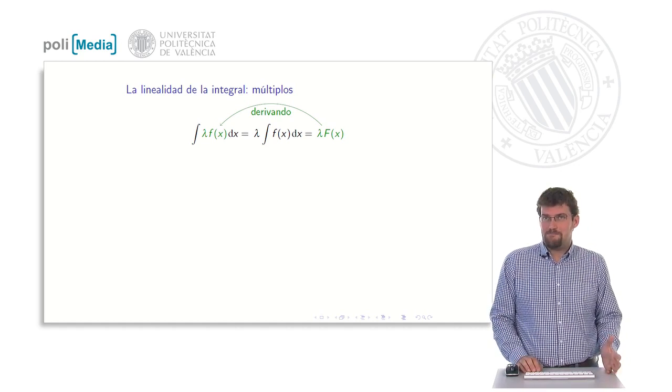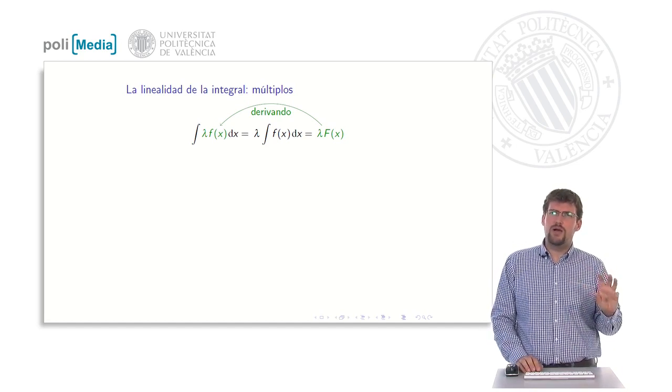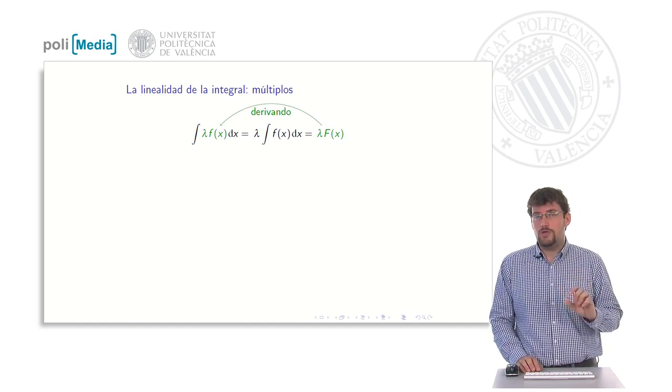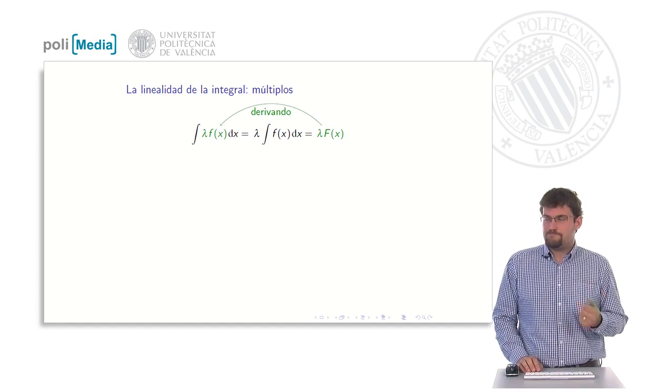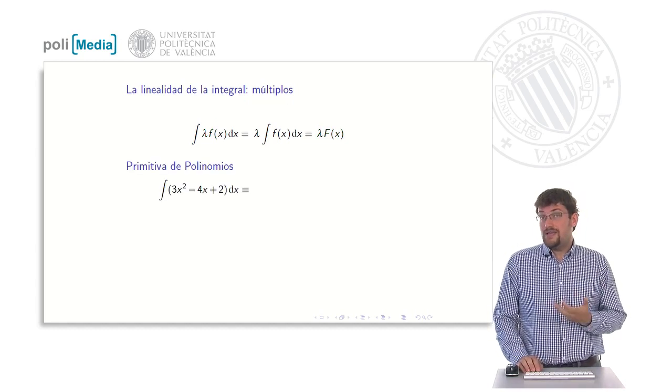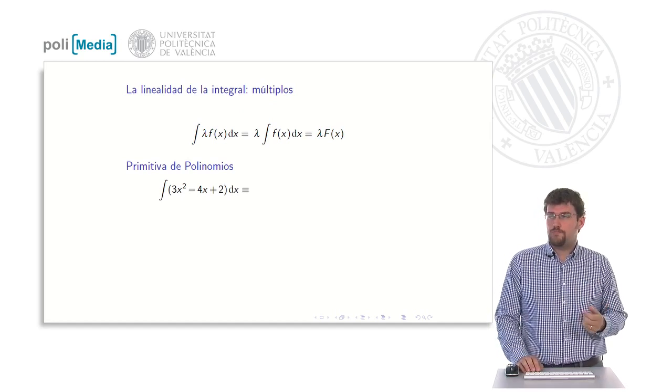These two properties, both the addition and multiplication, are what is usually called the linearity of the integral. And that linearity allows us to calculate the antiderivative of the polynomials.